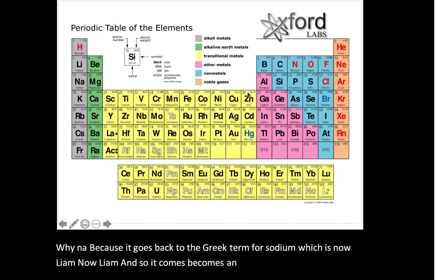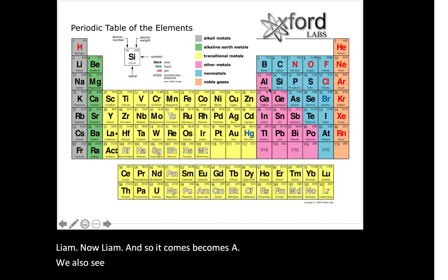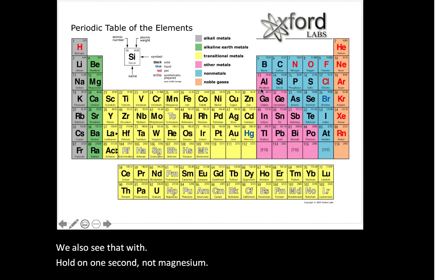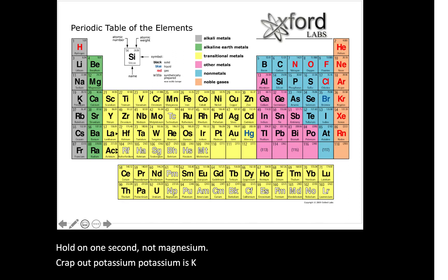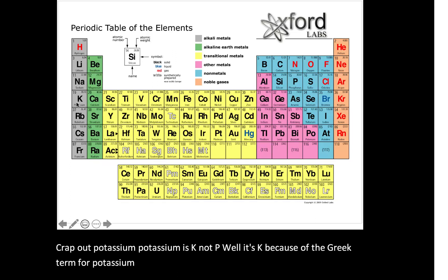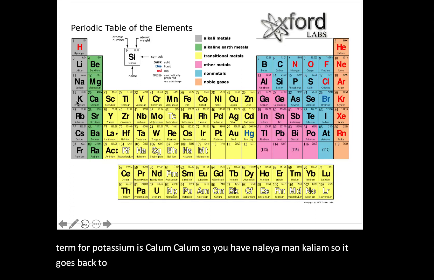Potassium is K, not P — it's K because the Greek term for potassium is Kalium. So you have Natrium and Kalium — it goes back to the Greek terminology. All of these boxes have a chemical symbol that denotes the chemical name. In the upper left-hand corner, you see a large whole number, which we call the atomic number. The atomic number equals the number of protons. In a neutral atom, the number of protons equals the number of electrons.